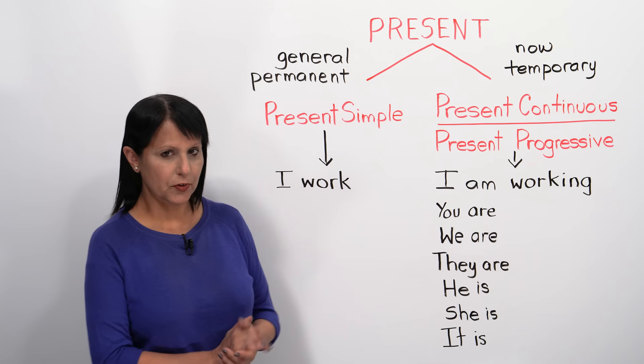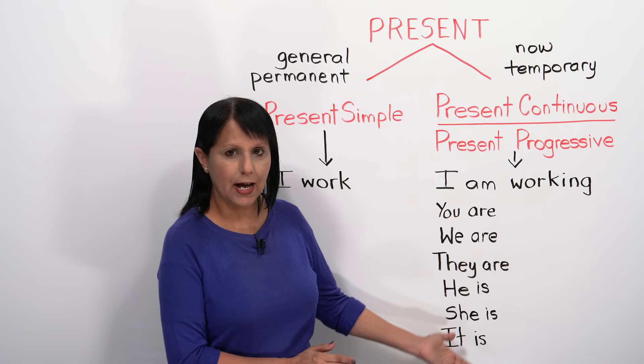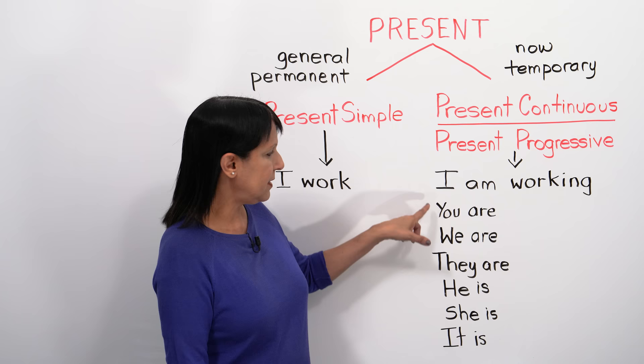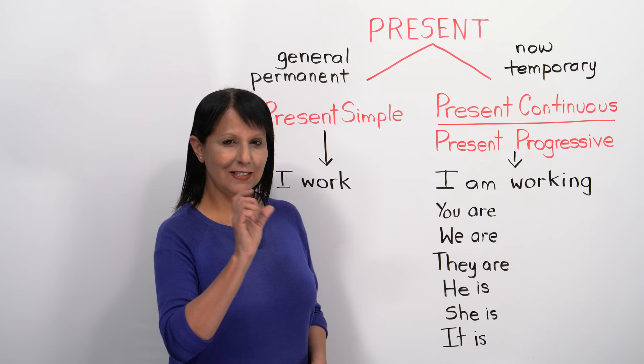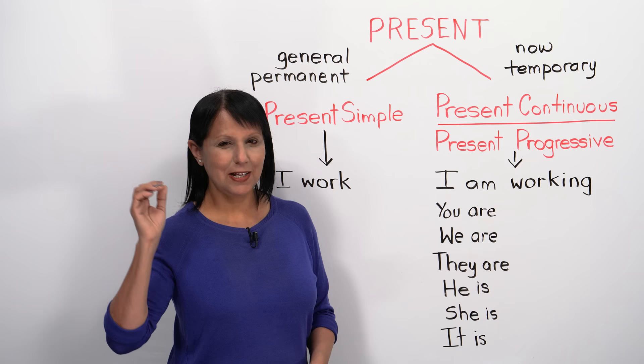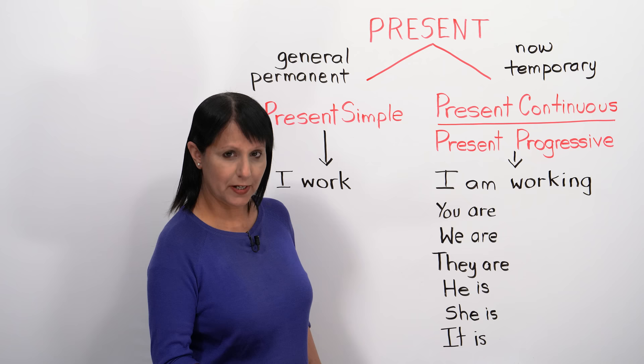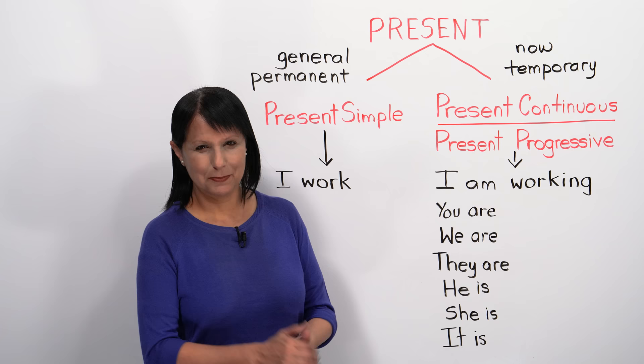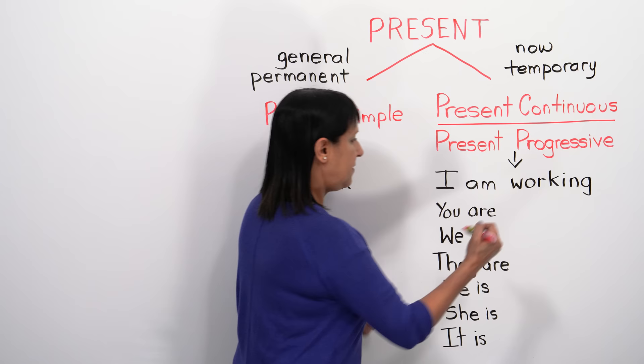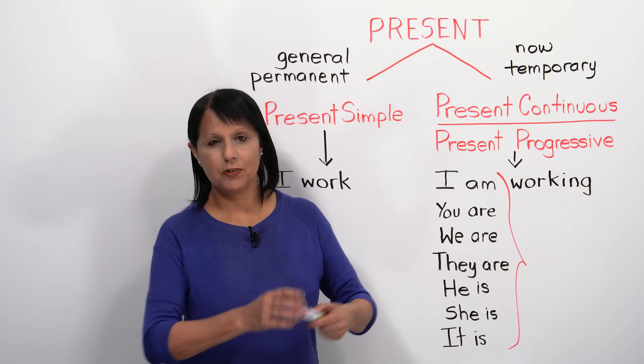That's the basic overview and the basic idea. How do we actually form this tense? We form it by using the subject — I, you, we, they, he, she, it — plus the verb 'to be,' plus the verb, plus -ing. For example: 'I am working,' 'you are working,' 'we are working,' 'they are working,' 'he is working,' 'she is working,' 'it's working.' So that's the basic overview of this tense.